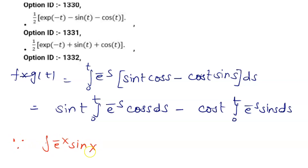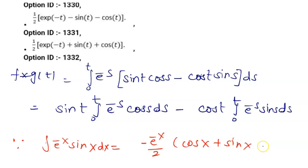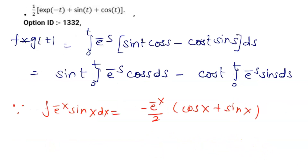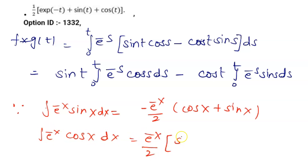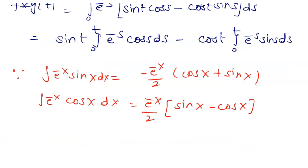We use the standard integration results: the integral of e^(-x)sin(x) dx = -e^(-x)/2 · [cos(x) + sin(x)], and the integral of e^(-x)cos(x) dx = e^(-x)/2 · [sin(x) - cos(x)]. We now substitute these results and apply the limits from 0 to t.